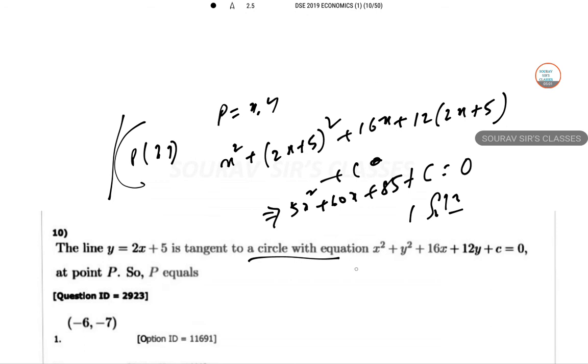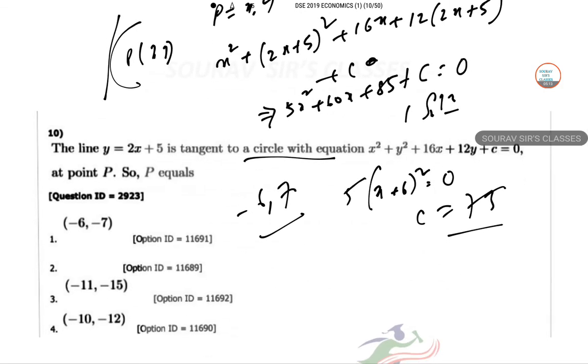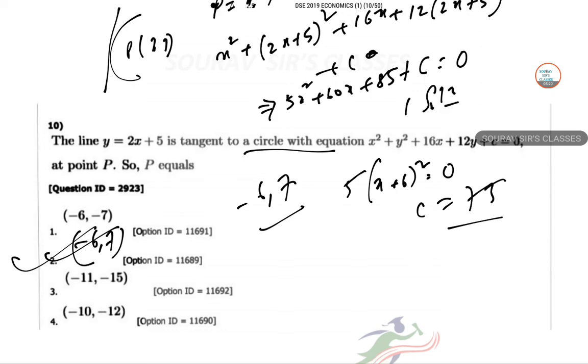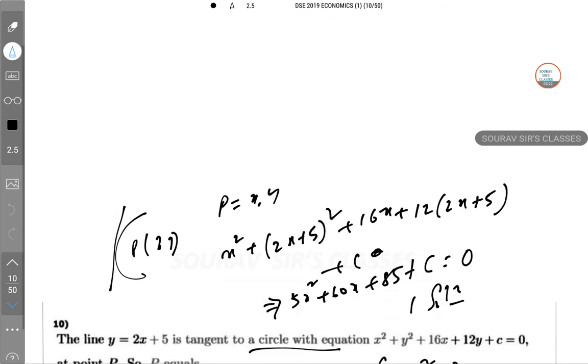So this intersects at this point. So this means that the equation must be 5 times x plus 6 whole square. So this is giving C equal to 75. So the point is minus 6 comma minus 7. So option number, it's not provided. And for the two options, let me see here. So here we go.